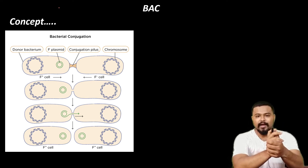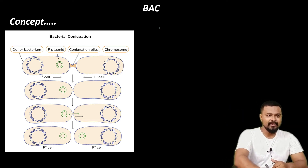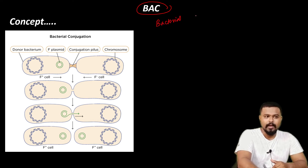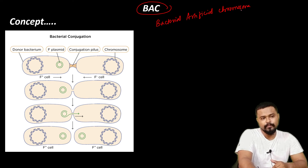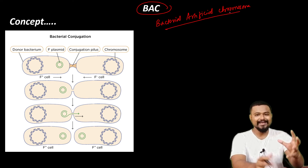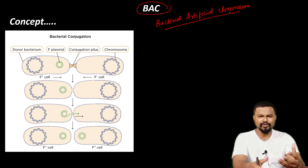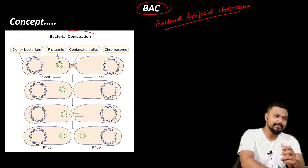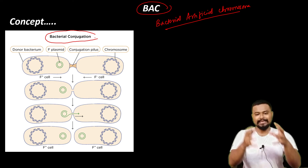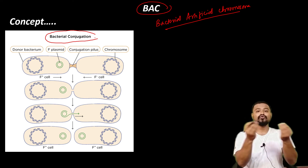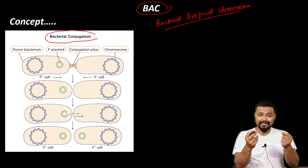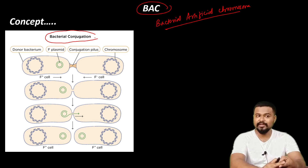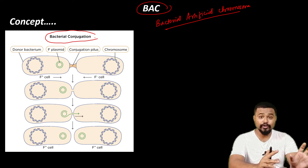Now we move to the concept of BAC — Bacterial Artificial Chromosome. Bacteria reproduce and transfer genetic material through three mechanisms: conjugation, transduction, and transformation. The conjugation concept is particularly important here.